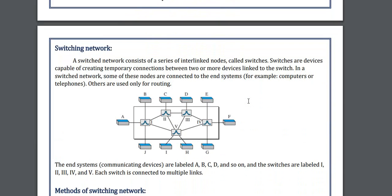Now switching networks. Switches are used nowadays in our routers. In every home we have internet with routers and those routers contain a switch. Switches are used to generate paths. A switch network consists of a series of interlinked nodes called switches. Switches are devices capable of creating temporary connections between two or more devices linked to the switch.